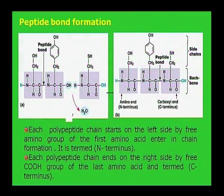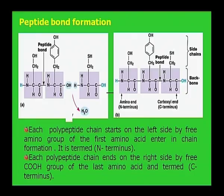This diagram shows the peptide bond formation. Each polypeptide chain starts on the left side by a free amino group, as you can see in the diagram. The free amino group of the first amino acid entering the chain formation is termed the N terminus. Each polypeptide chain ends on the right side by a free COOH group on the last amino acid, termed the C terminus.